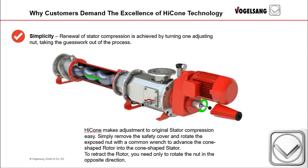Simplicity. To renew the fit or compression of the rotor by the stator is as easy as turning a wrench. First, stop the pump. Then, by turning the adjusting nut, you advance the visible indicator across the scale, which is represented as a value of 0 to 100. 100 represents 100% of adjustment remaining, and 0 indicates that there is no adjustment remaining at all. This takes the guesswork out of adjusting.